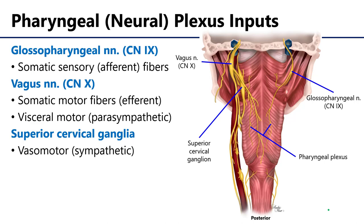The vagus nerves, or cranial nerves 10, have a dual role within the pharyngeal neural plexus. First of all, the vagus nerves are conducting somatic motor impulses, or efferent stimulation, to the pharyngeal neural plexus. The vagus nerves also have a significant autonomic, specifically parasympathetic, role in the body.